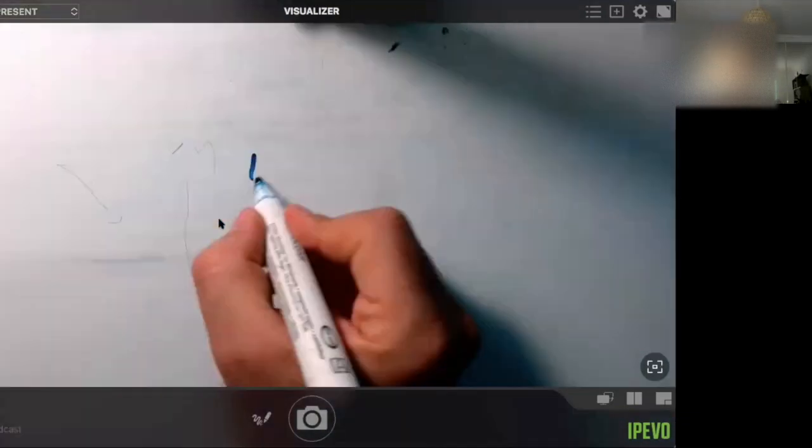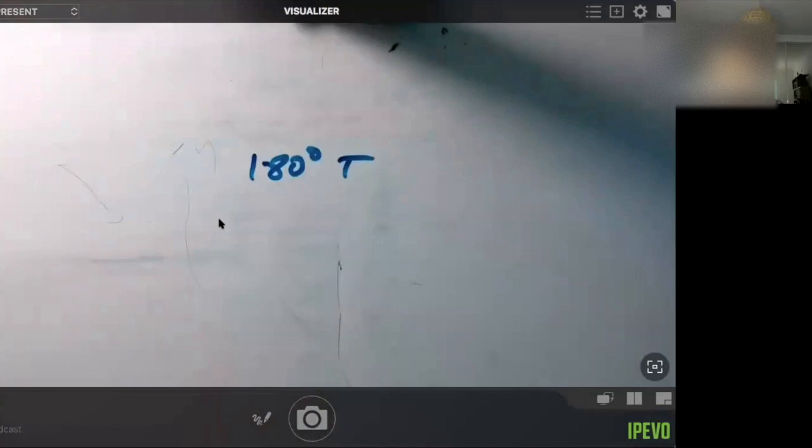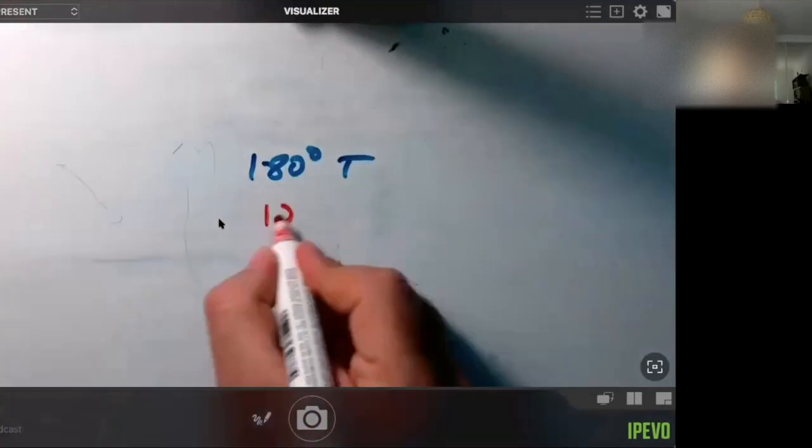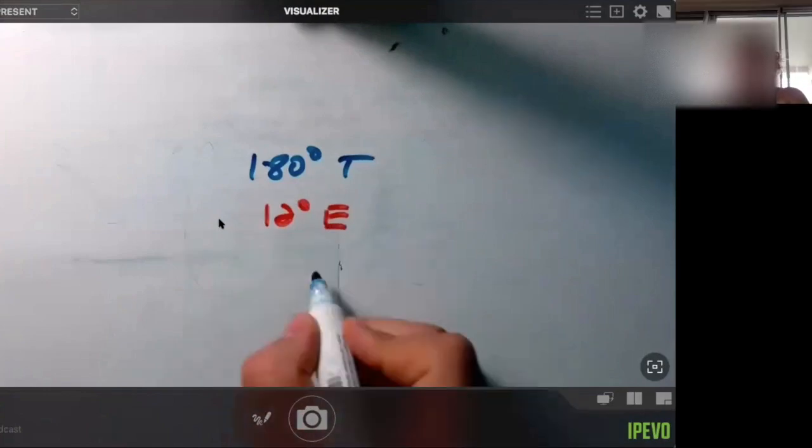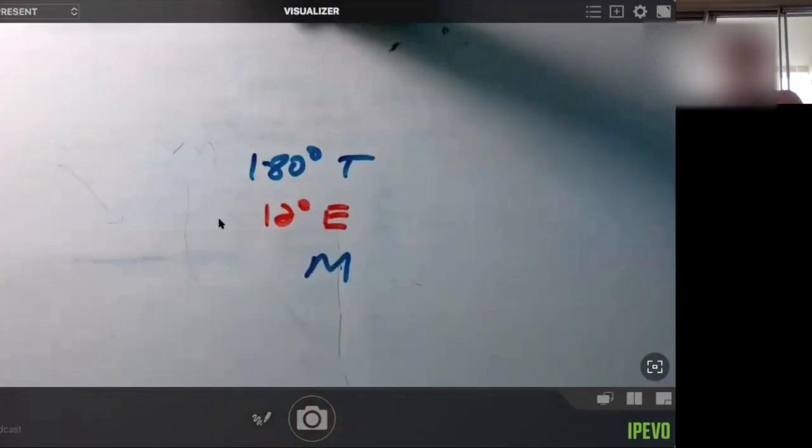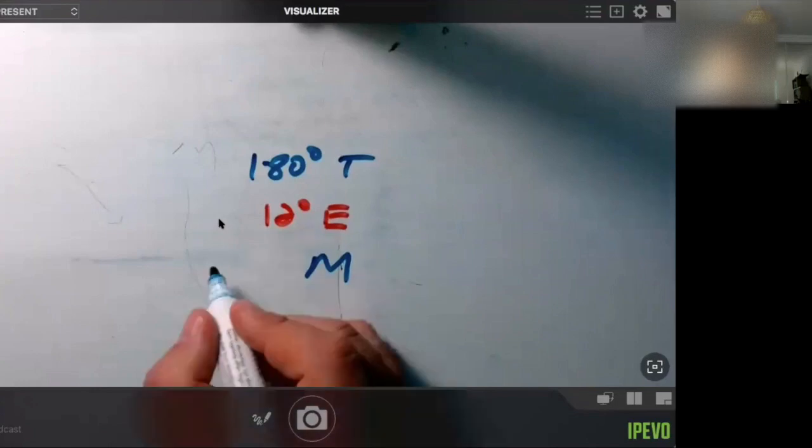If I have 180 degrees true and I have 12 degrees east, what's going to be the magnetic? It's going to be 168. 168, excellent.